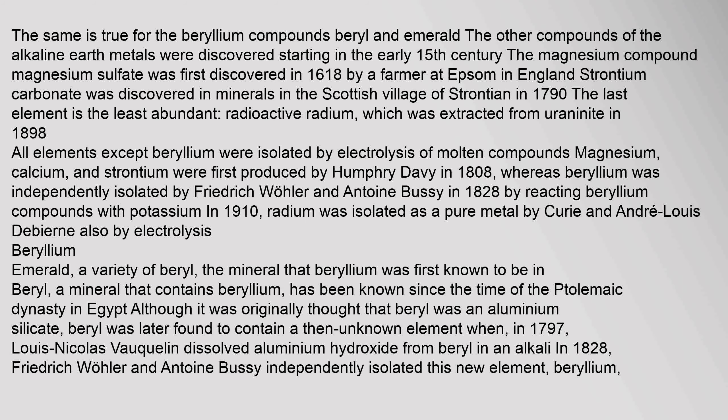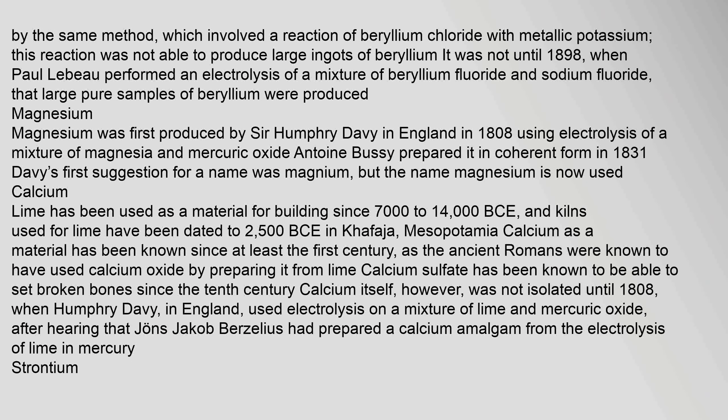Magnesium, calcium, and strontium were first produced by Humphrey Davy in 1808, whereas beryllium was independently isolated by Friedrich Wöhler and Antoine Bussy in 1828 by reacting beryllium compounds with potassium. In 1910, radium was isolated as a pure metal by Curie and André-Louis Debierne by electrolysis. Beryl, a mineral containing beryllium, has been known since the Ptolemaic dynasty in Egypt. In 1797, Louis-Nicolas Vauquelin dissolved aluminium hydroxide from beryl in an alkali, identifying the unknown element. Large pure samples of beryllium were not produced until 1898, when Paul Lebeau performed electrolysis of a mixture of beryllium fluoride and sodium fluoride.